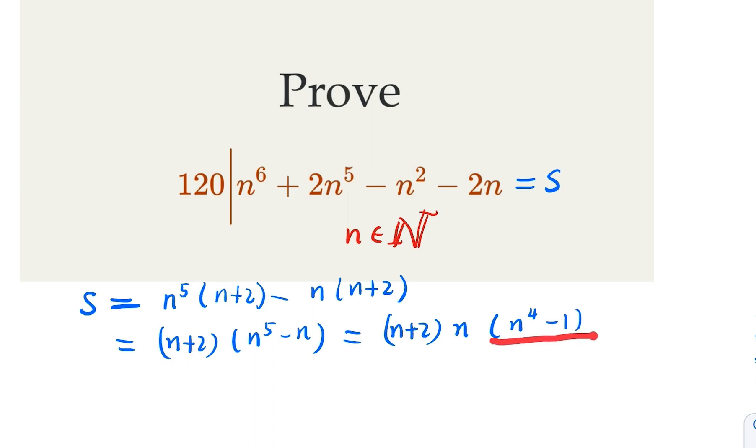You have n plus 2, n, and then you have n to the fourth minus 1. Now this term here can be factored as n squared minus 1, n squared plus 1. Let's skip one step here. So that's n squared minus 1 times n squared plus 1.